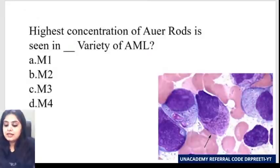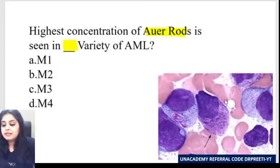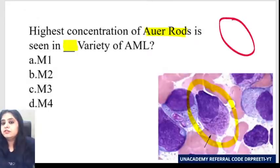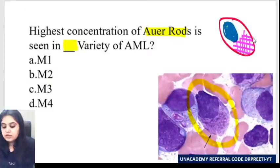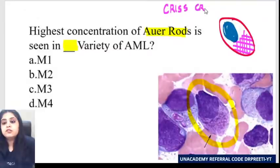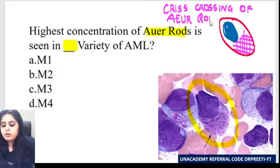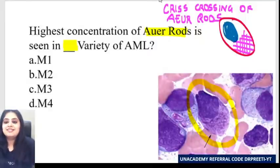Question 2: An image is shown. The question asks which variety of AML shows the highest concentration of Auer rods. The image shows a cell with lots and lots of Auer rods that are crossing each other — criss-crossing of Auer rods. What is such a cell called, where multiple rods are criss-crossing? It is a faggot cell. What are faggot cells? Faggot cells are the criss-crossing of Auer rods.